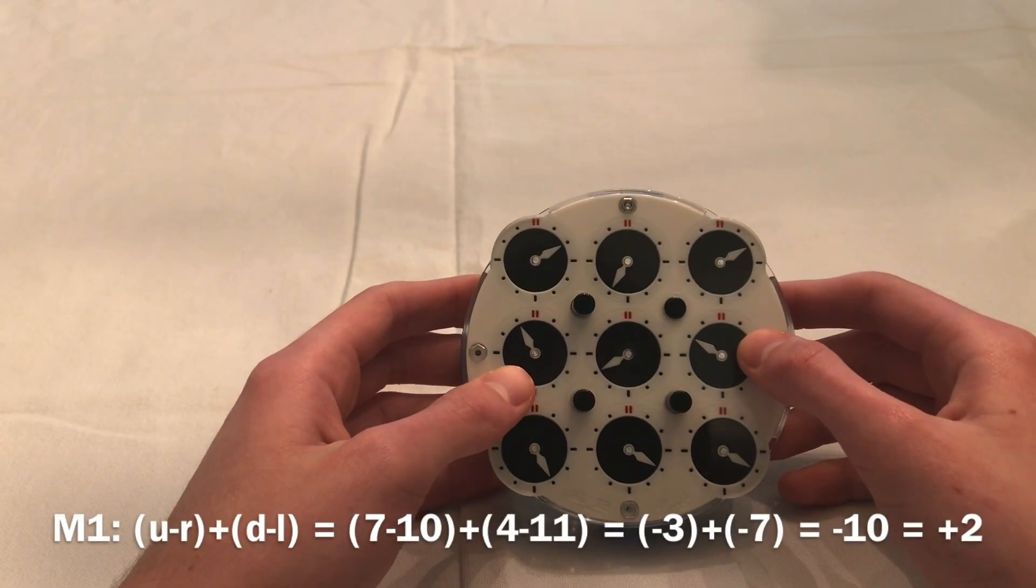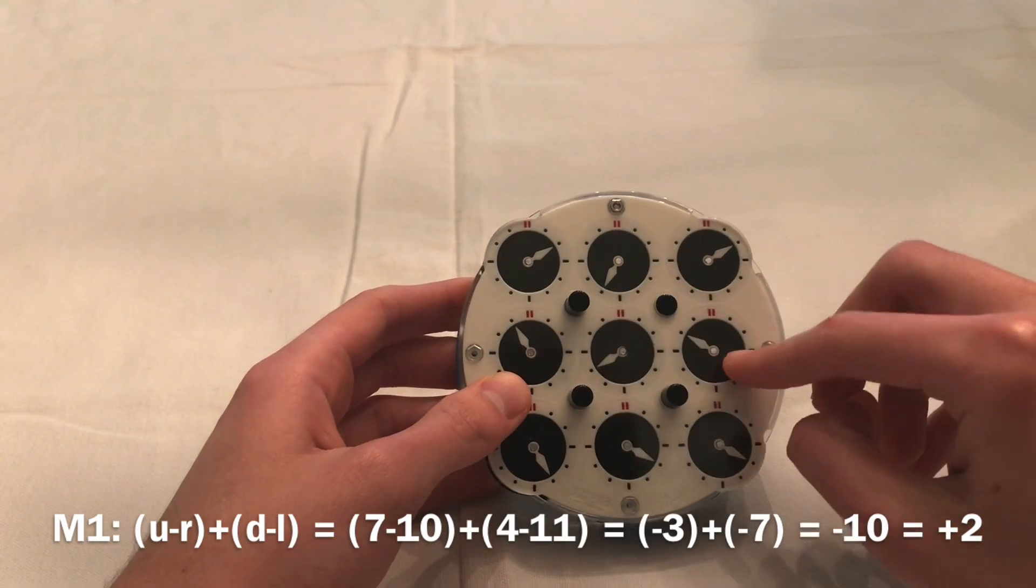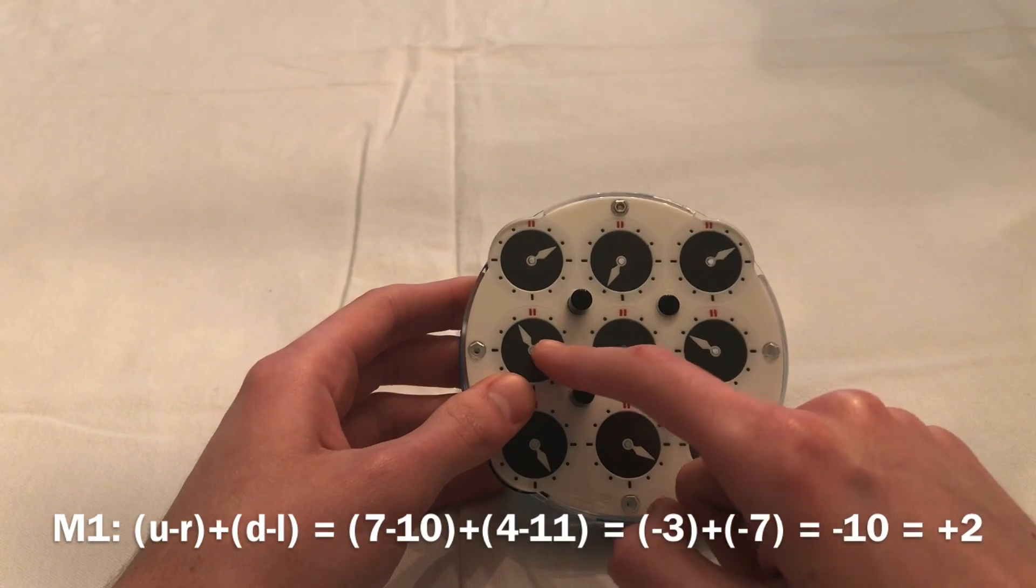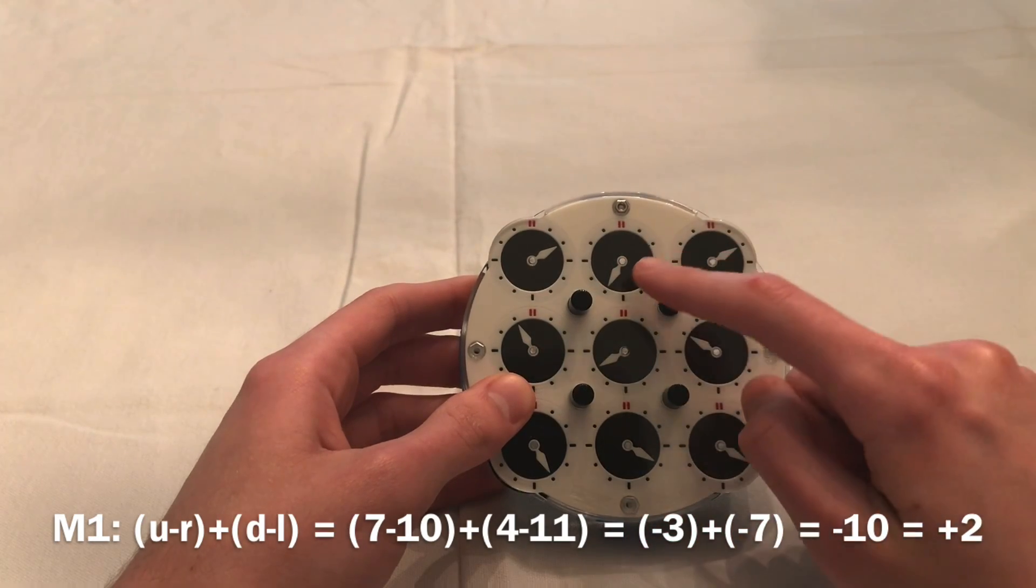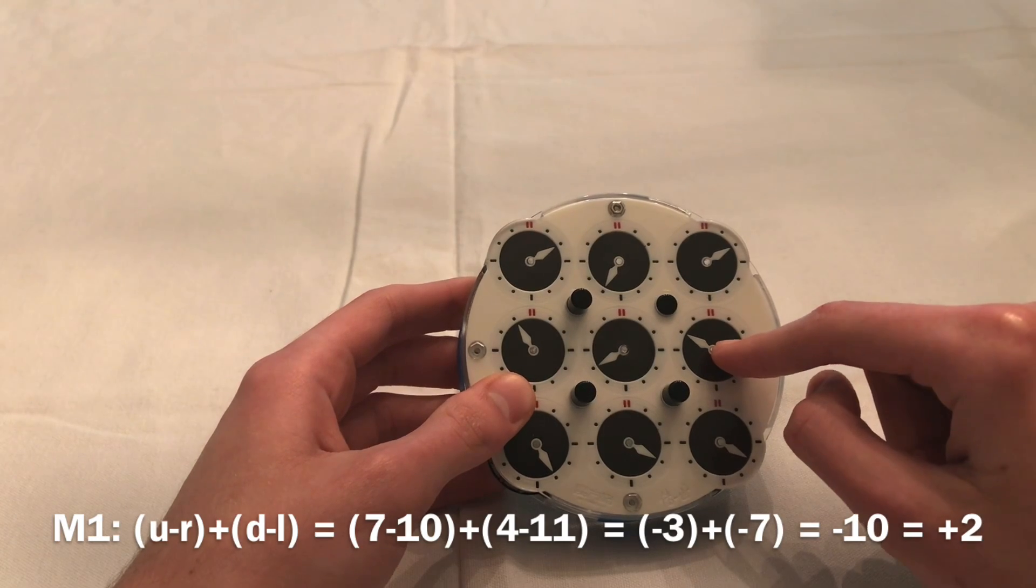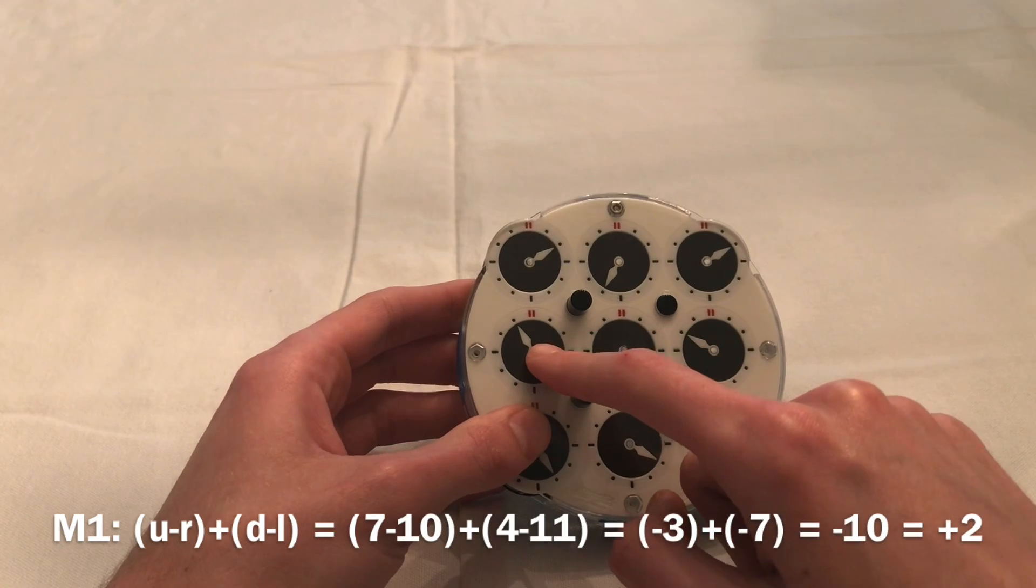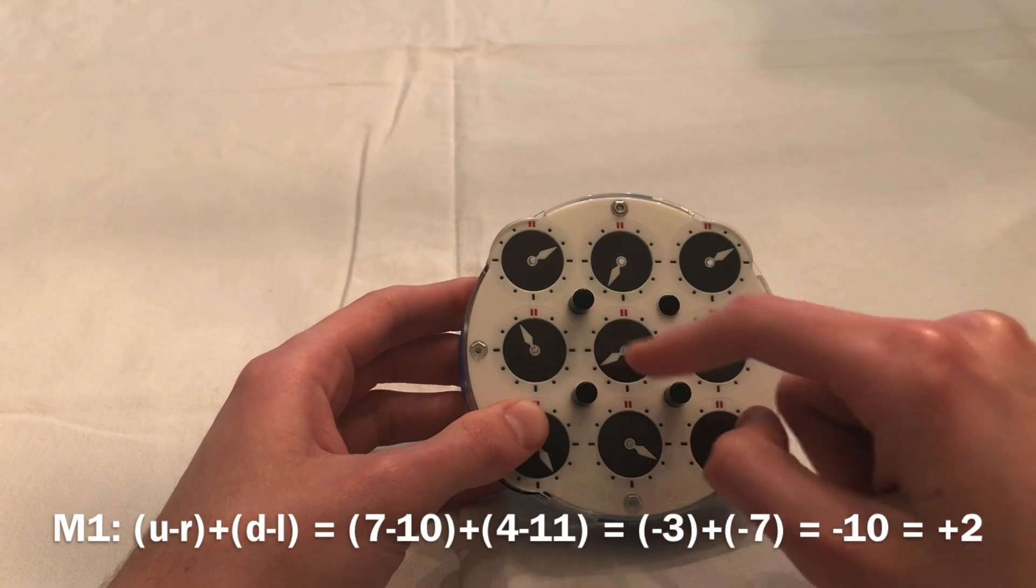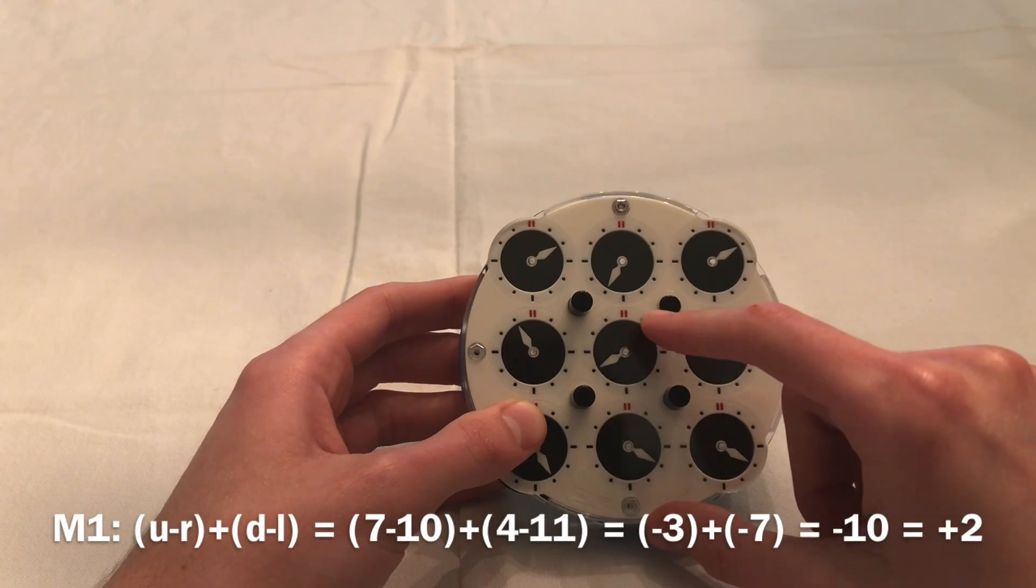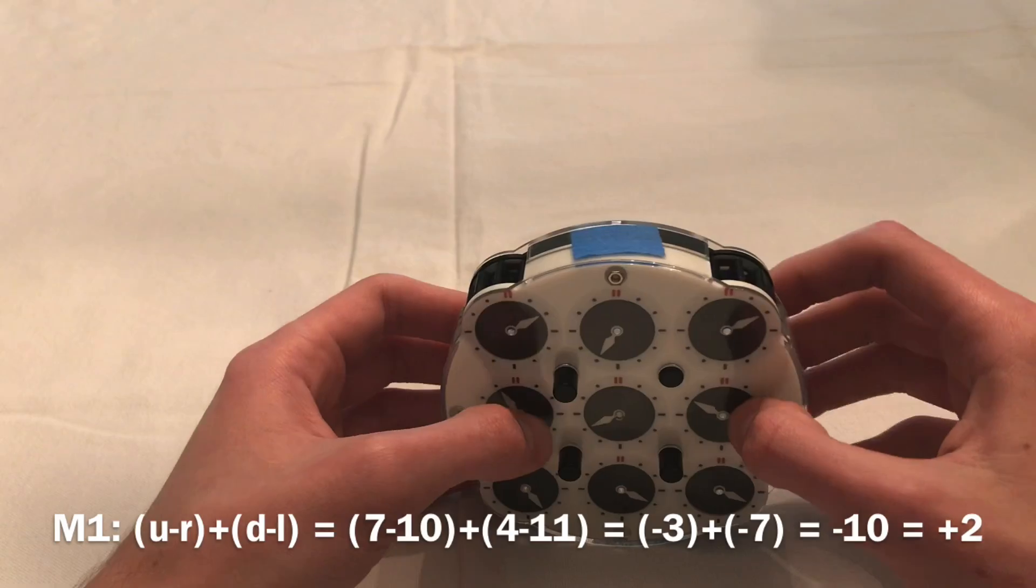The first number you'll calculate is U minus R plus D minus L. So 7 minus 10, that's equal to negative 3, plus 4 minus 11, which is equal to negative 7. So negative 3 plus negative 7 equals negative 10. Negative 10 equals 2.